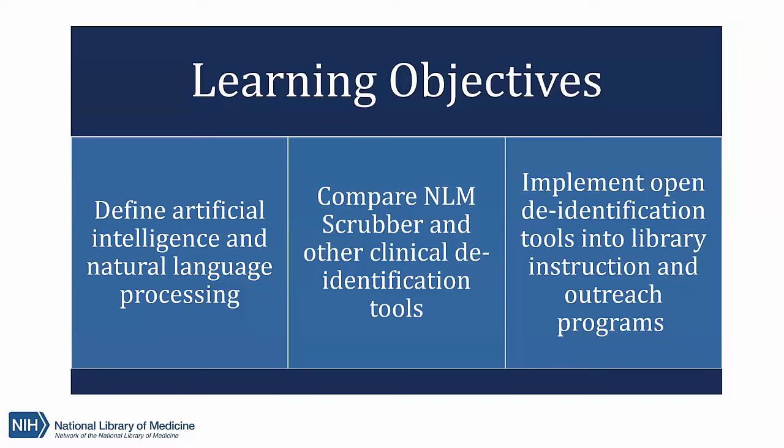We have three learning objectives today. The first is that we will define artificial intelligence and natural language processing. We will compare the NLM Scrubber to other clinical de-identification tools. And we will talk about how to implement open de-identification tools into your library instruction and outreach programs.